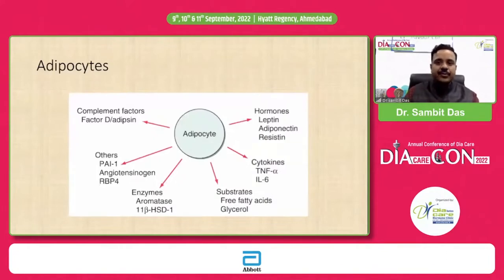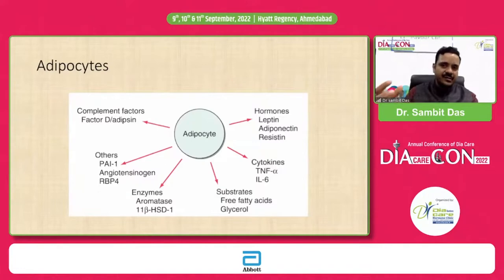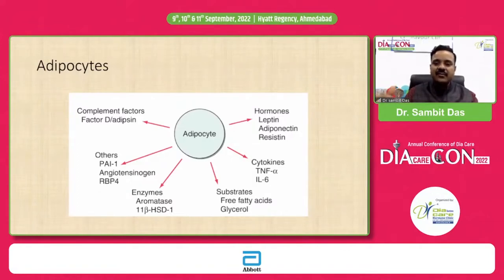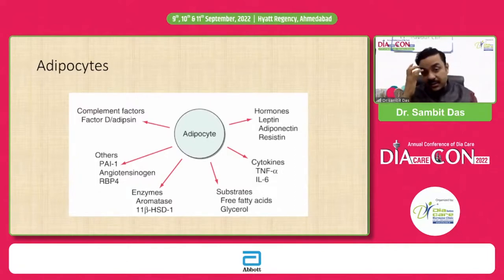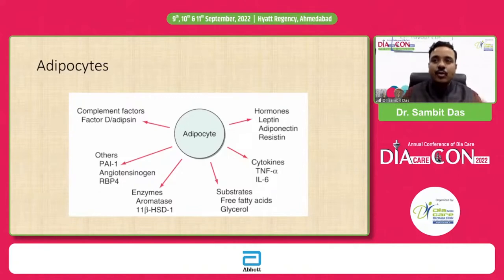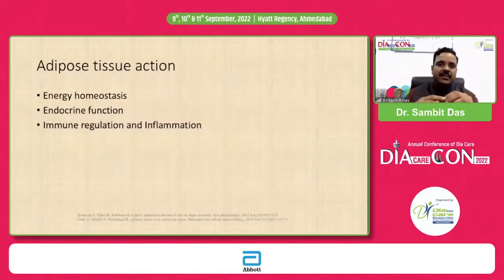This is a simplistic diagram of an adipocyte, which secretes various things apart from just storing fat. Around 20-30 years ago we only knew that adipocytes store fat, but now we know they secrete various other things — hormones like leptin, adiponectin, and resistin; cytokines like TNF-alpha and interleukin-6; fatty acids and glycerol from fat breakdown; enzymes like aromatase that converts testosterone to estradiol and 11-beta-HSD1 that converts cortisone to cortisol; and inflammatory markers like PAI-1, angiotensinogen, retinol binding protein, factor D, and adipsin, to name a few.